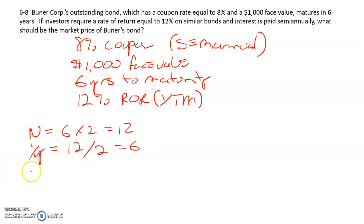The payment is the coupon payment, that's the face value times the coupon rate, 8% divided by 2, which is 40. And then the future value is the face value of 1,000.